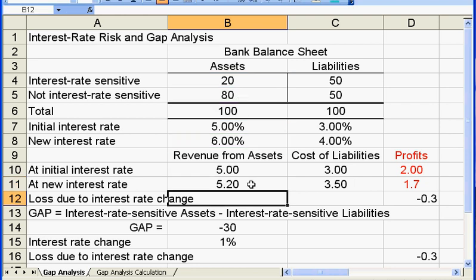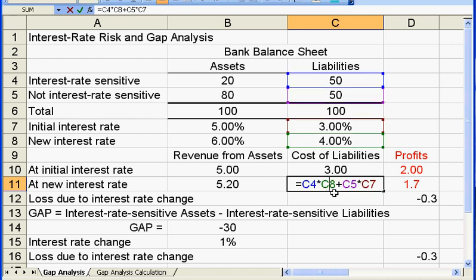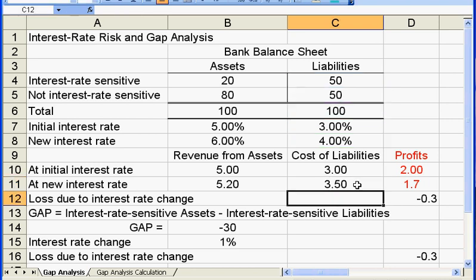So we got $5.2 in total revenue at the new interest rate level. How about the cost? We use the new 4% interest rate times this $50 interest rate sensitive liabilities, and then the same old 3% times this $50 interest rate insensitive liabilities. Now we got $3.5 cost.